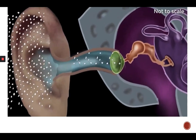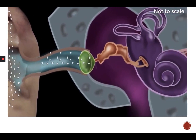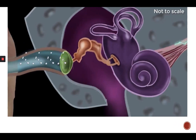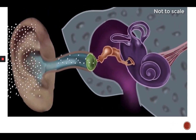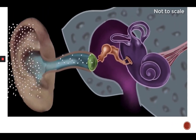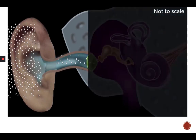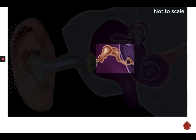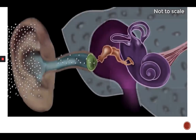Let's look at how the different parts of the ear work together to make us experience sound. Our ear can be divided into three parts: the outer ear, the middle ear, and the inner ear. The outer ear starts with the pinna.